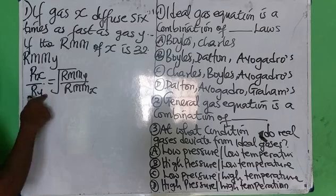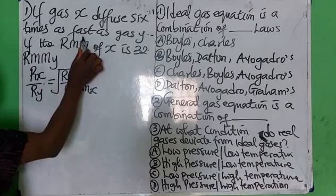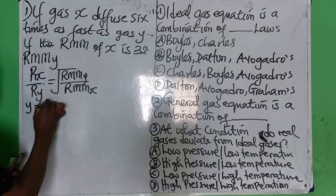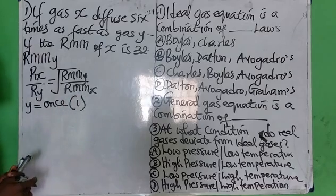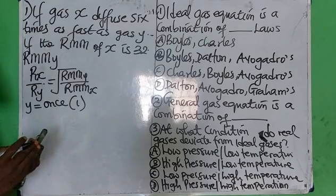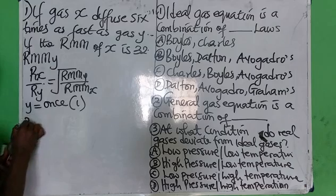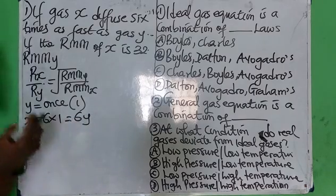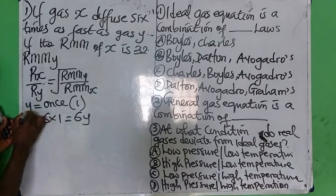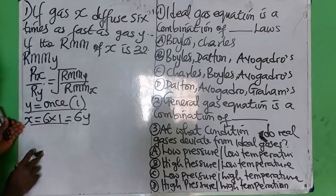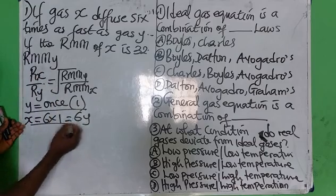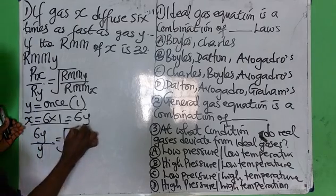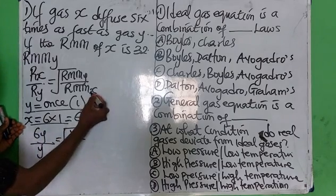I will assume that gas Y diffused just once, since gas X diffuses six times as fast as gas Y. That means gas X diffused six times one, which gives you six Y. So from the formula, rate of X over rate of Y: the numerator becomes six Y and the denominator is Y, which simplifies to six. They said the relative molecular mass of X is 32.